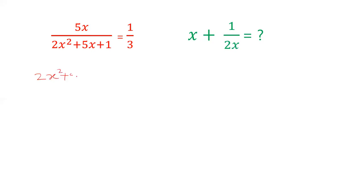2x square plus 5x plus 1 equals 3 times 5x. 2x square plus 1 equals 15x, minus 5x transferred here. So 2x square plus 1 equals 10x.